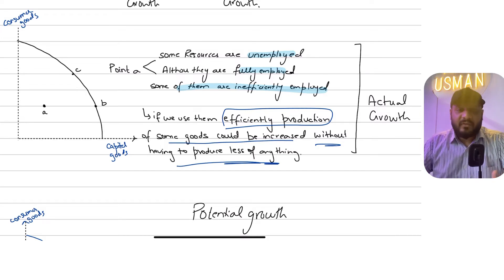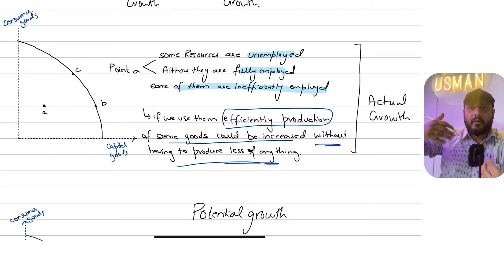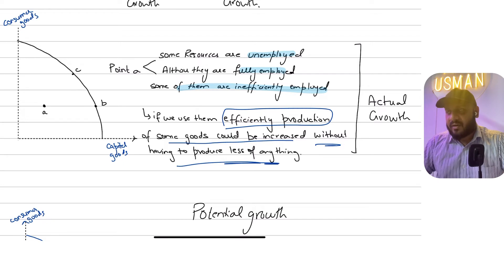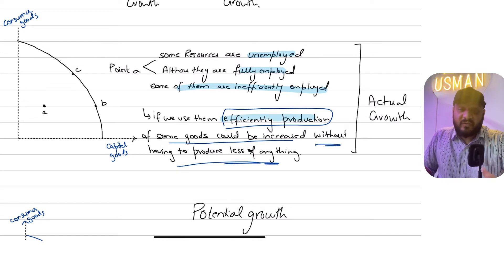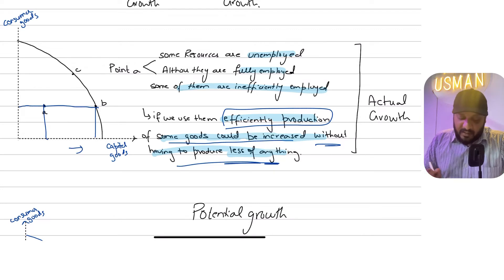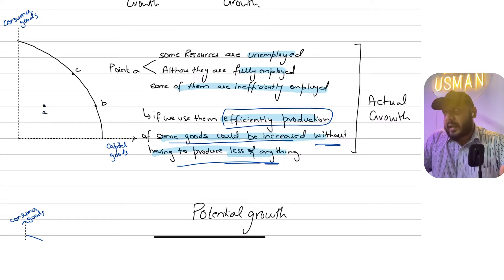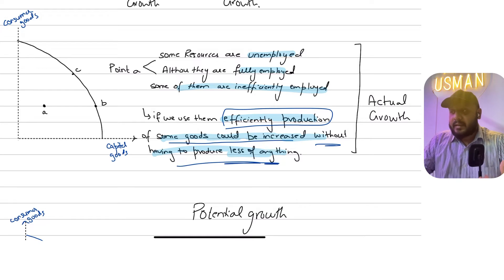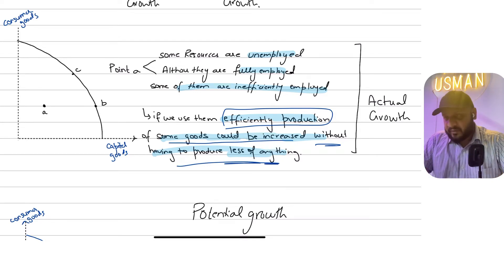If we use our resources efficiently and move from inefficiency to efficiency, since our resources were idle, we don't have to forego anything or make a trade-off to increase production. The trade-off technically would not exist. For example, moving from point A to point B, you increase output of capital goods without having to forego consumer goods output, because you were underemploying your resources or not utilizing them efficiently before.